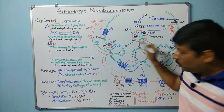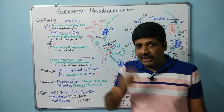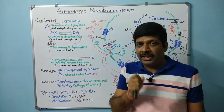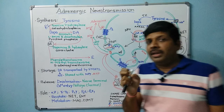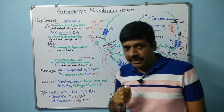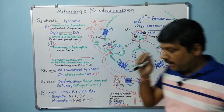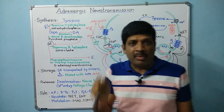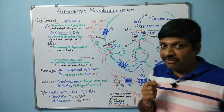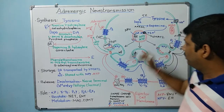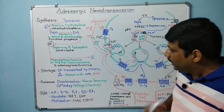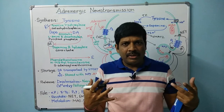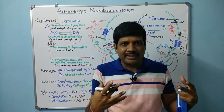There are two types of storage vesicles: large dense-core vesicles and small dense-core vesicles. The large dense-core vesicle is specifically for chromaffin cells, storing epinephrine, whereas the small dense-core vesicle stores norepinephrine and ATP.